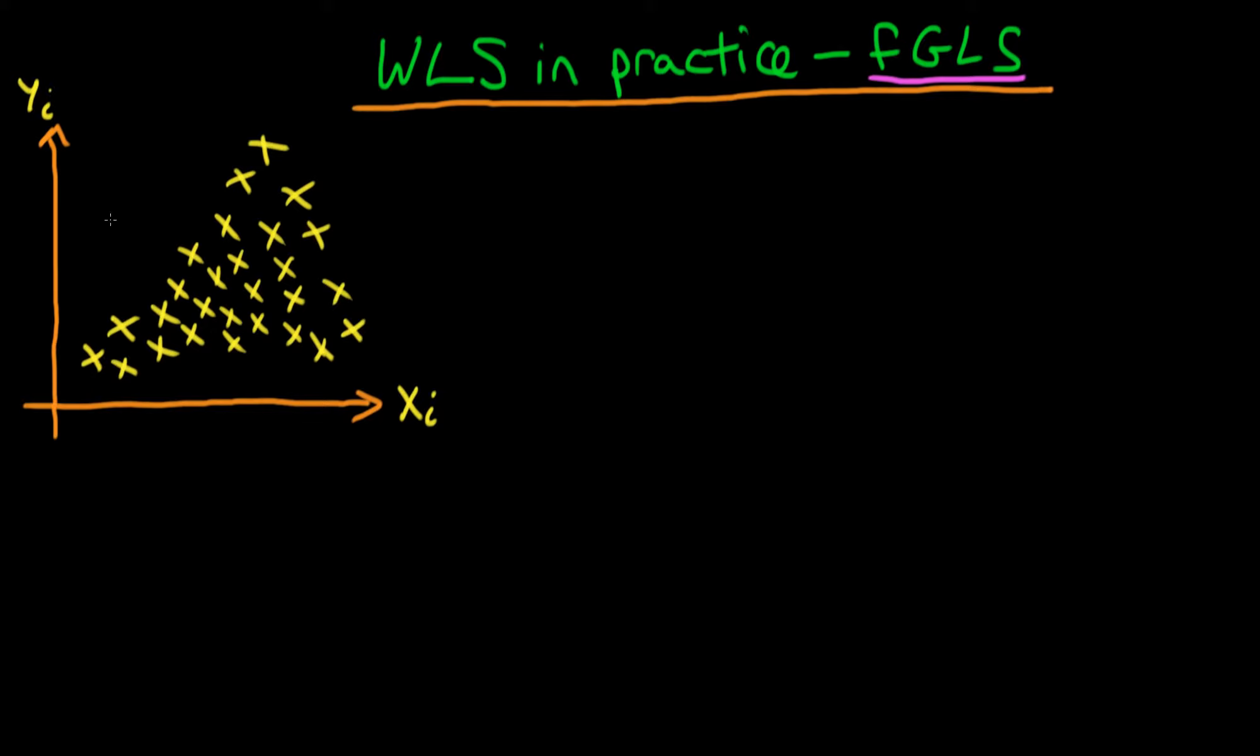The example which we talked about a few videos ago was where we had a bivariate relationship between yi and xi that was positive, namely as xi tended to increase, yi tended to increase as well. Furthermore, we can see that the distribution of the points away from the line was increasing as our independent variable increased.